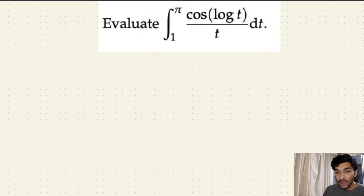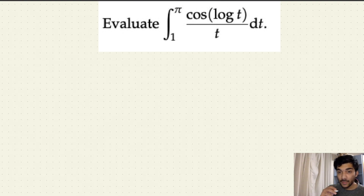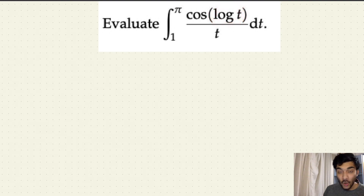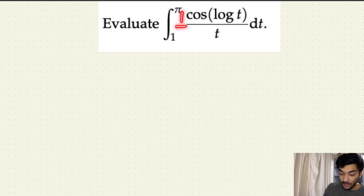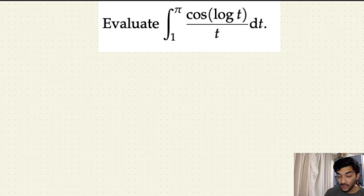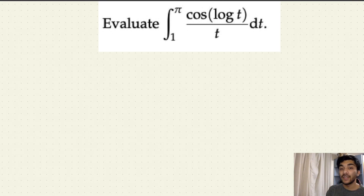Let's go over this example and see how I know to use substitution here. Whenever you have in your integral expression a function and the derivative of that function together, you'll most likely use substitution. In this example, we have the function log(t), and we know that the derivative of log(t) is 1/t. So we have log(t) as well as 1/t in the expression, giving us confirmation to use substitution.